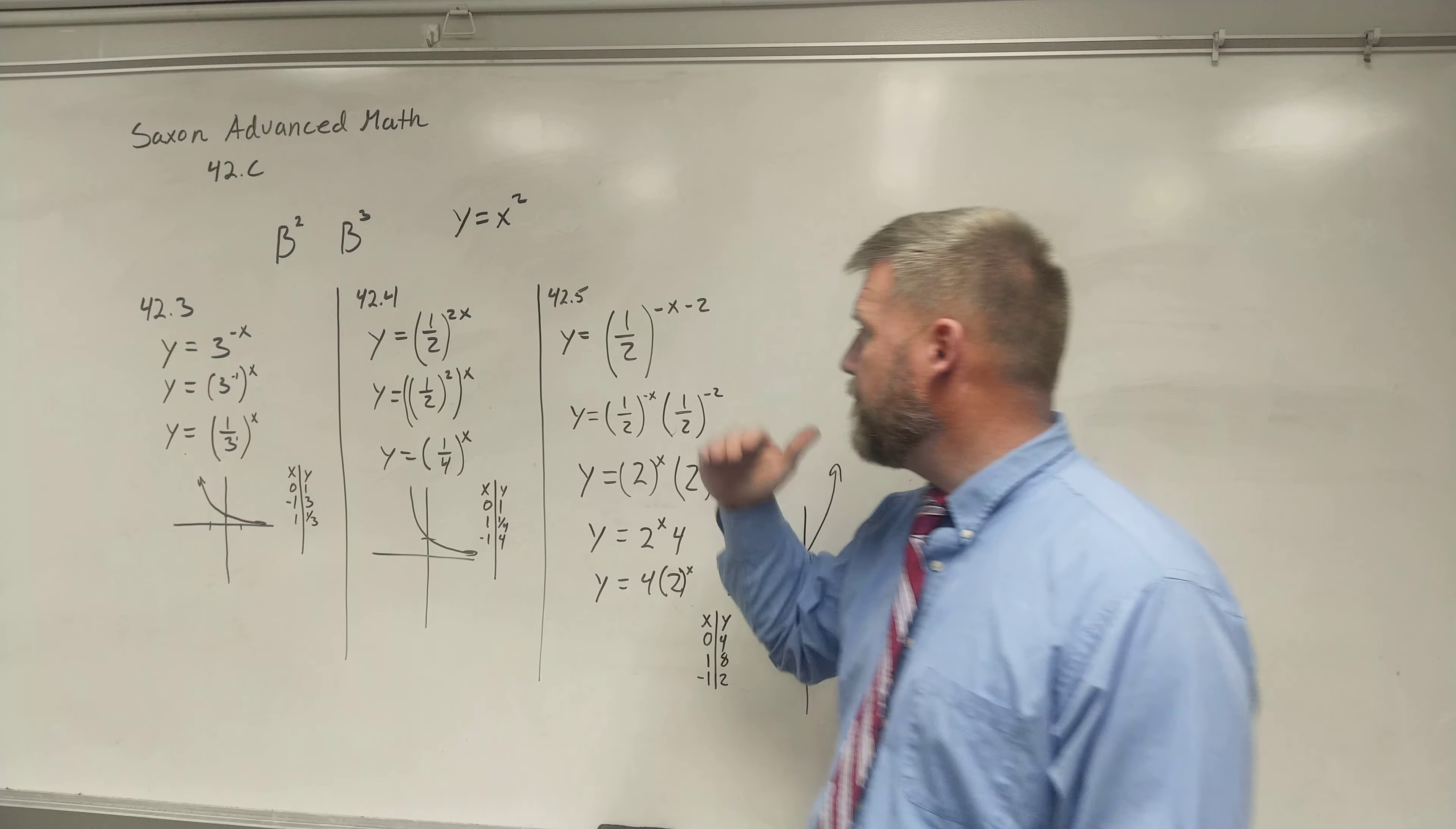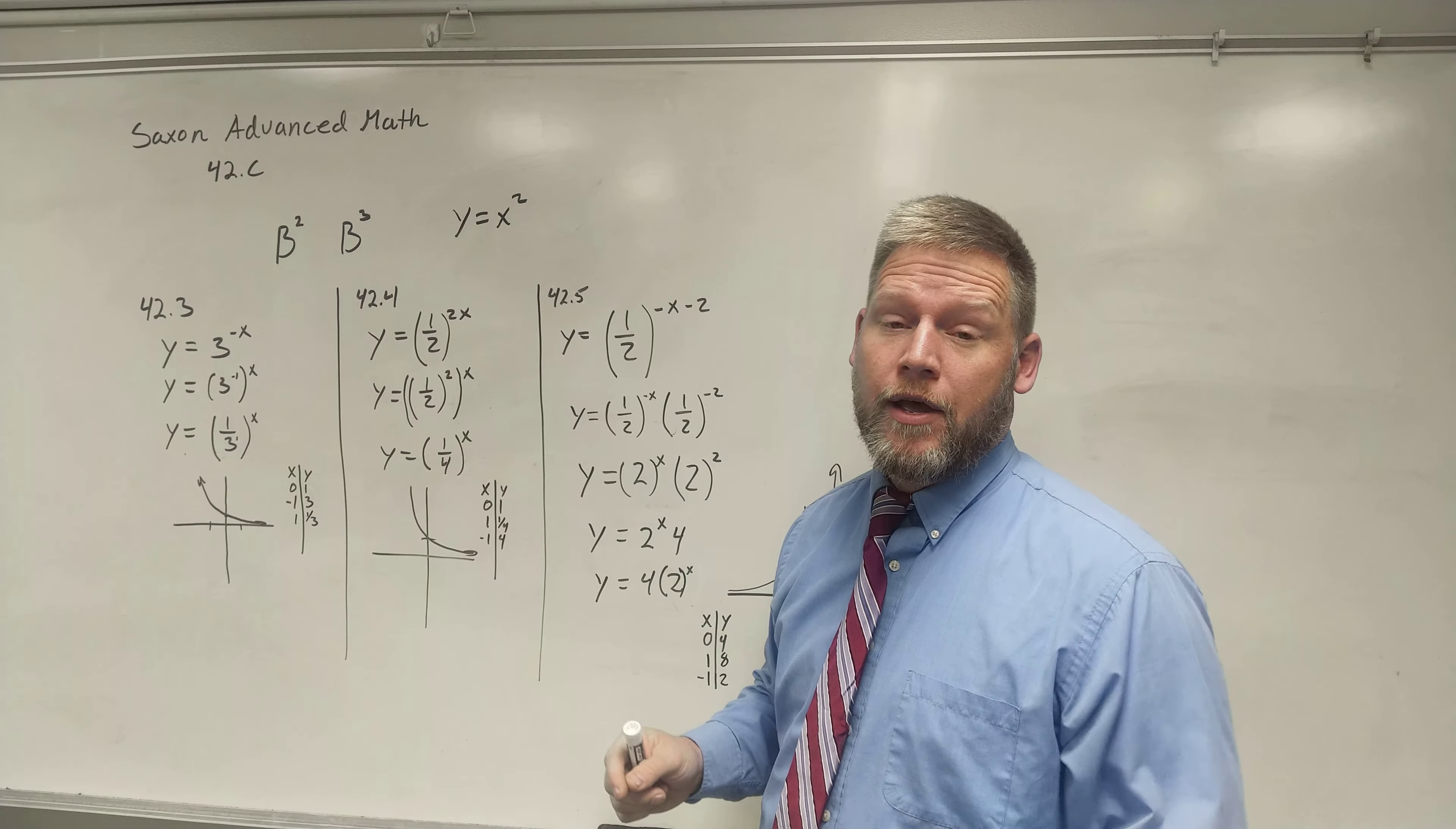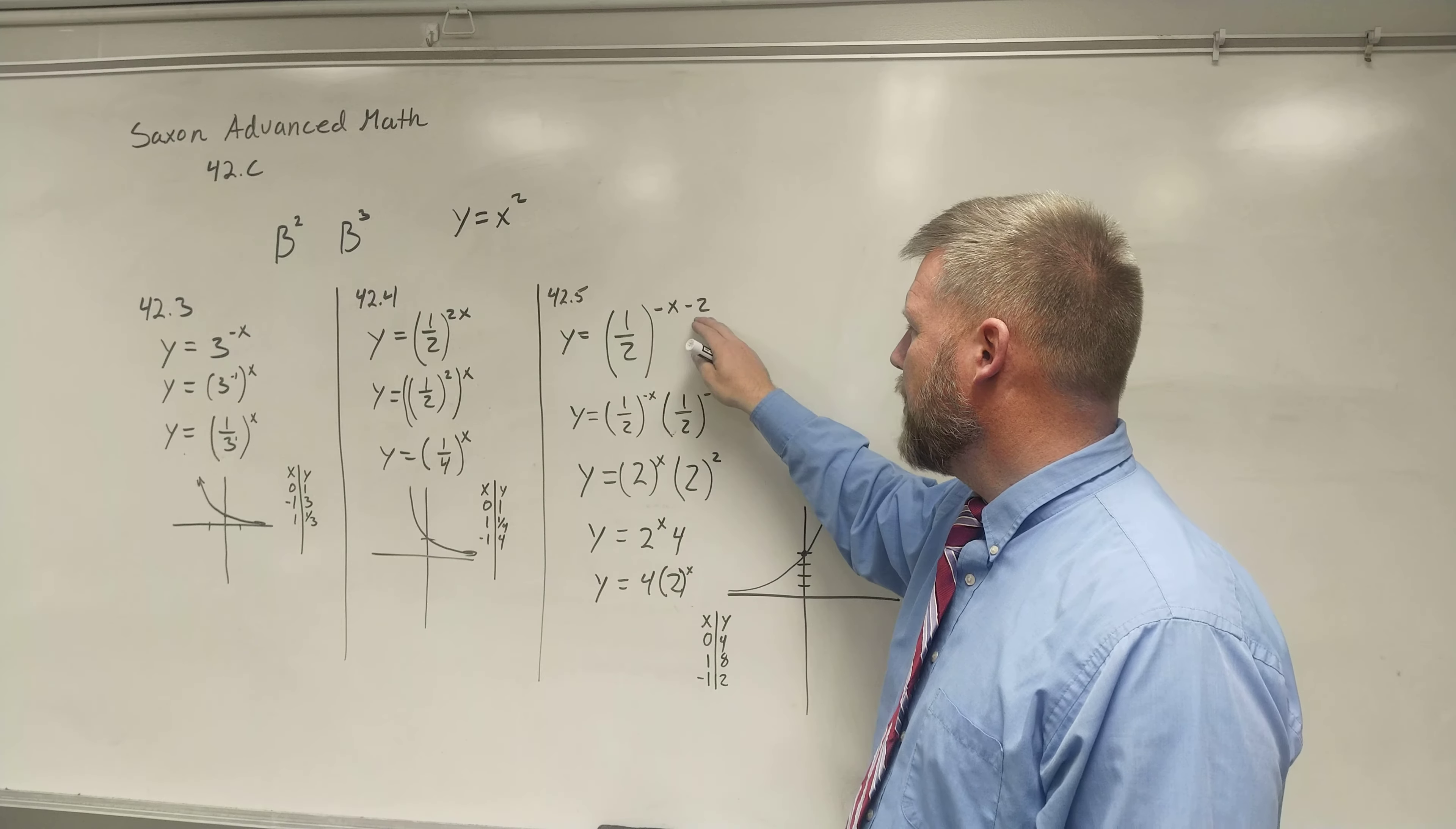42.5, once again, we're stepping it up a little bit. Notice these both have a crossing point on the y-intercept at 1. And we would make the assumption every time it must cross at 1. And up to this point, every graph that we've done with the exponent being a power has been a crossing or a y-intercept of 1. So it's really easy for us to make that assumption. 42.5 breaks down that assumption a little bit. We're going to look at that: 1/2 to the negative x minus 2.